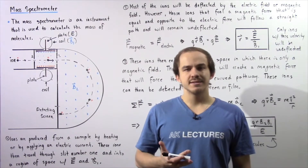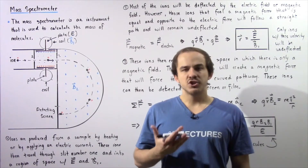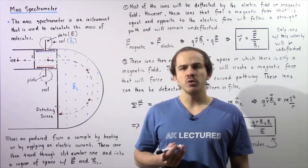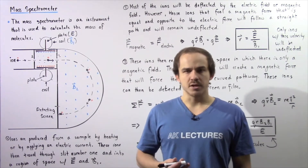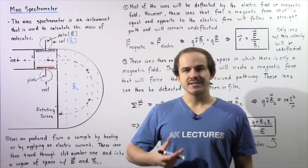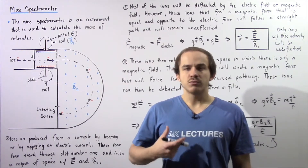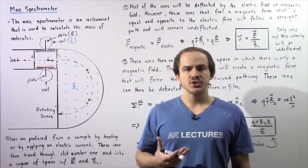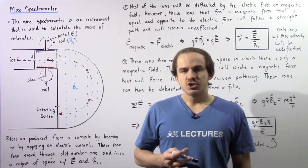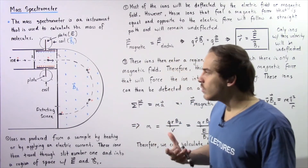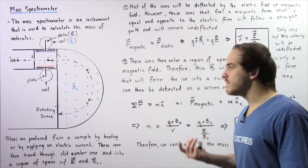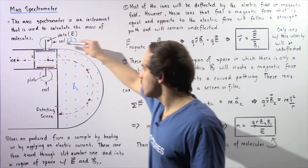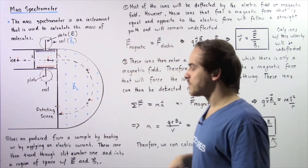In this lecture, we're going to discuss an important instrument that uses the principles of magnetic fields and electric fields known as the mass spectrometer. The mass spectrometer is essentially a device that we use to measure the mass of molecules in a certain given sample. Let's see exactly how we can calculate the mass of our molecules using the mass spectrometer, which looks something like this.